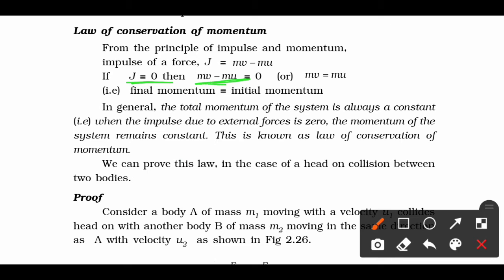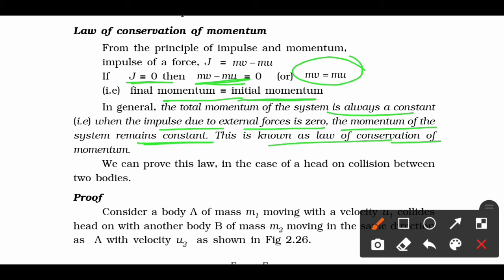Equating it to zero, we get mv equals mu, or we can say final momentum equals initial momentum. In general, the total momentum of the system is always constant when the impulse due to external forces is zero. The momentum of the system remains constant — this is known as the law of conservation of momentum.